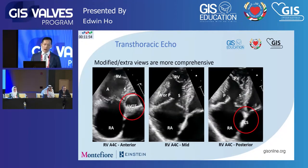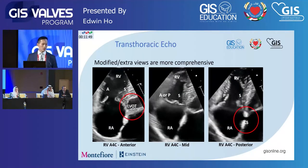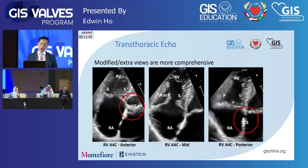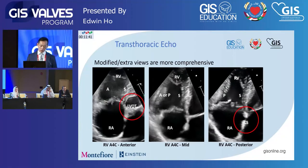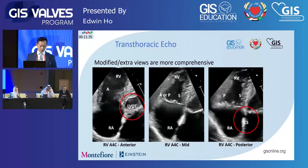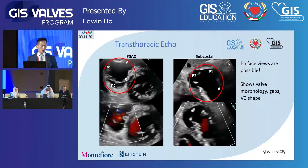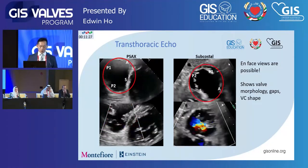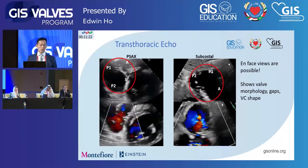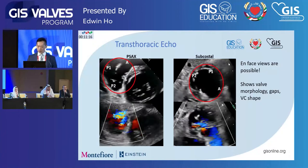To improve transthoracic imaging, we can add modified or extra views to be more comprehensive. For example, in the apical four-chamber RV-focused view, you can tilt the plane anterior, mid, and posterior to scan the valve from end to end. That increases the likelihood you're seeing the leaflet you expect to see, but it's still not perfect. We can also do modified views to get an en-face type view from the parasternal short axis and subcostal window, which provides information about morphology, gaps, where the jet is coming from, and the shape of the vena contracta.